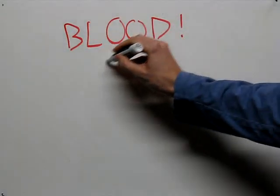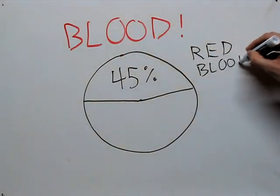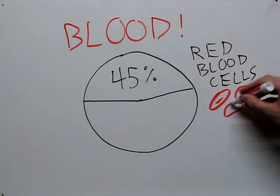First of all, let's talk about what your blood is made of. About 45% of your blood by volume is made up of red blood cells. You've probably heard of them. They're kind of donut shaped with filled centers, and they're responsible for carrying oxygen around your body.